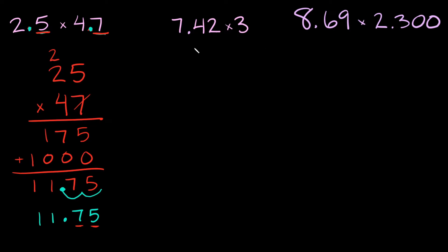So here we have 7.42 times 3. So again initially I'm just going to ignore my decimal and I'm just going to multiply these numbers like normal. So I'm going to have 742 times 3.